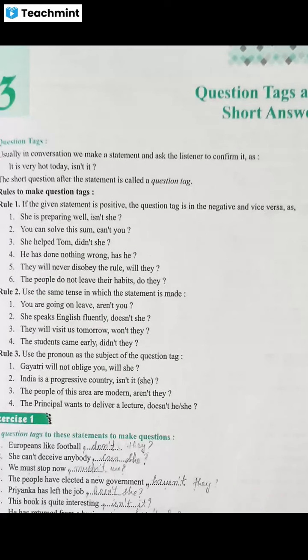You can solve this sum. It's very simple. So, for example, if you have to use the sentence, the word 'can' helps. 'Can' is a helping verb. So, write it, because the sentence is positive.